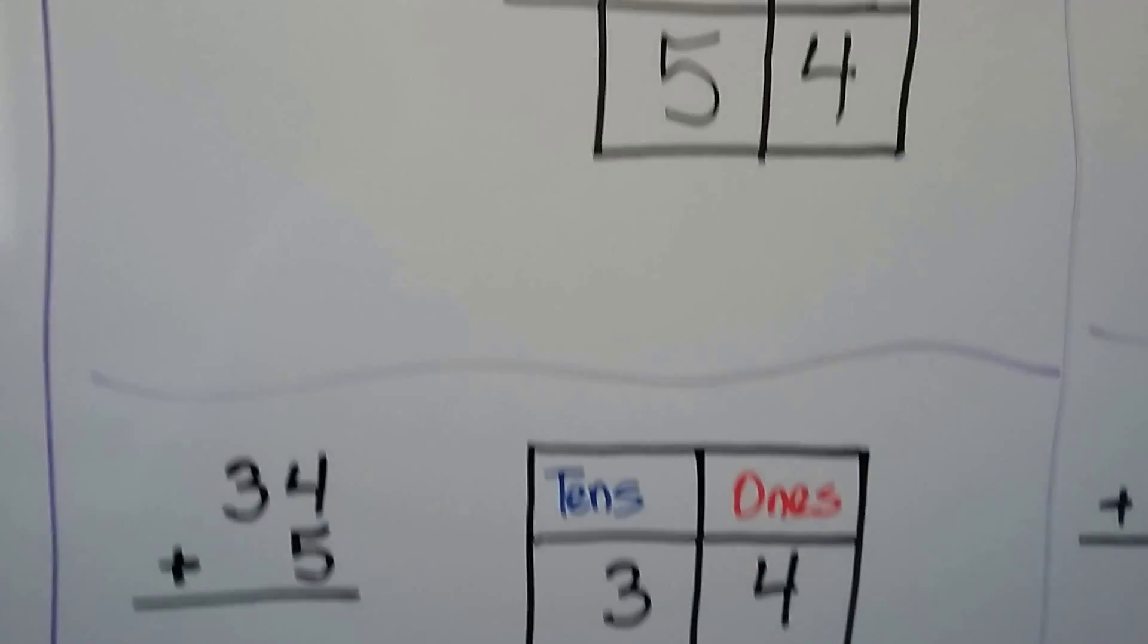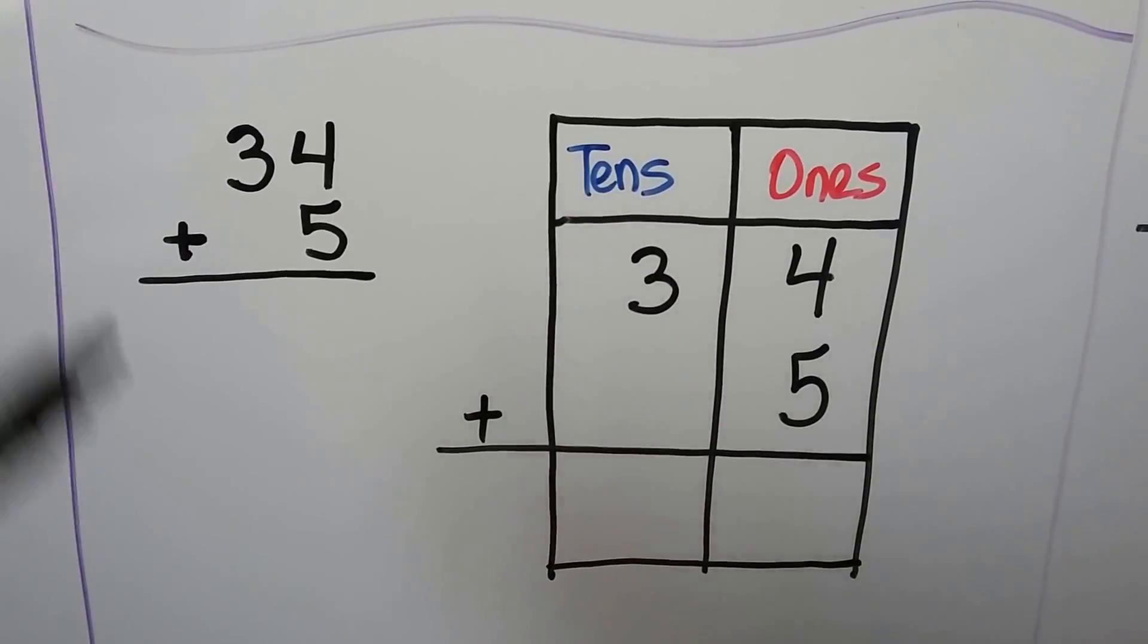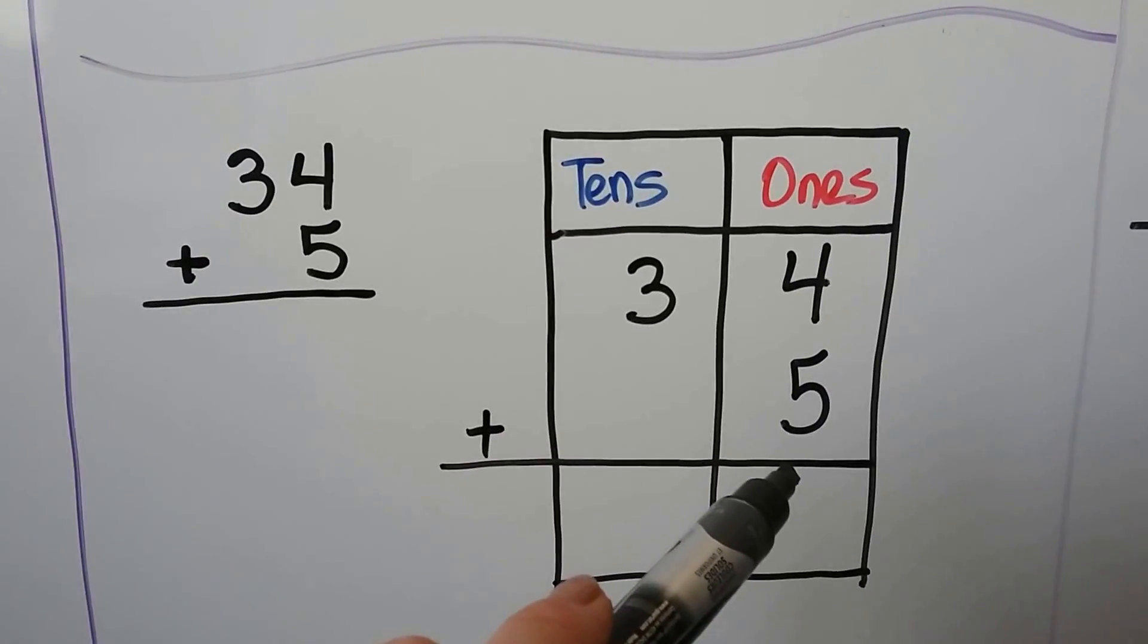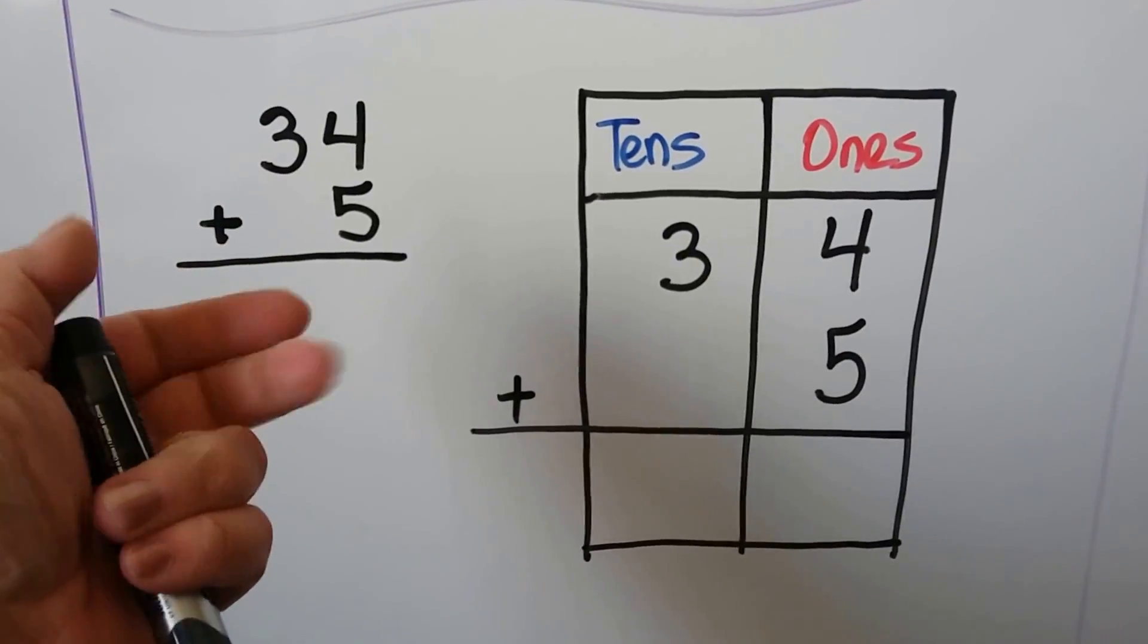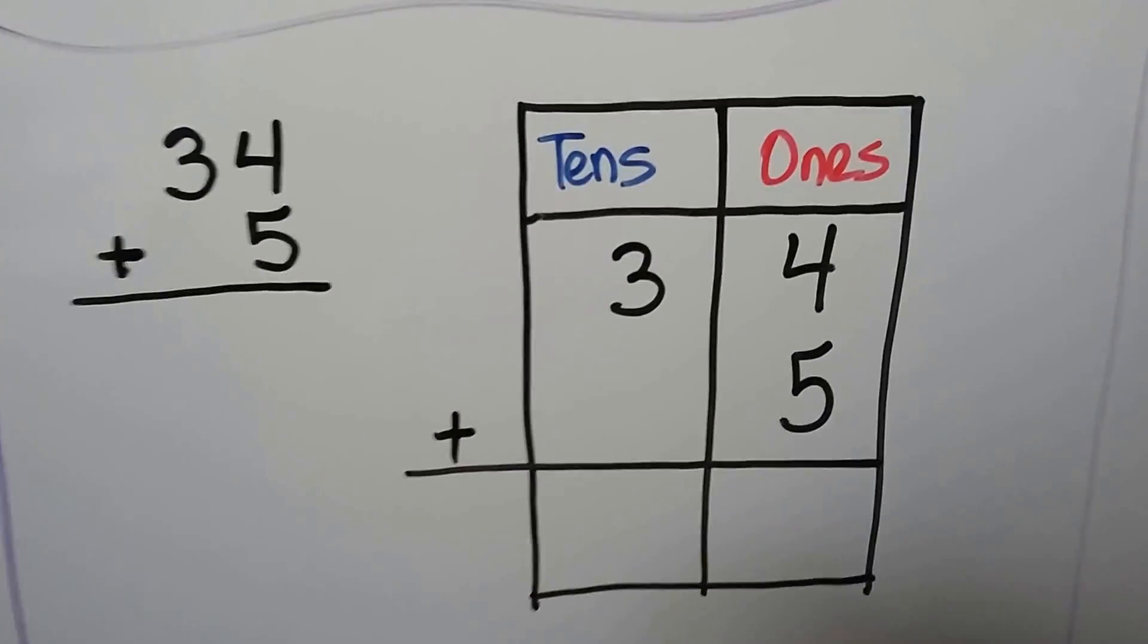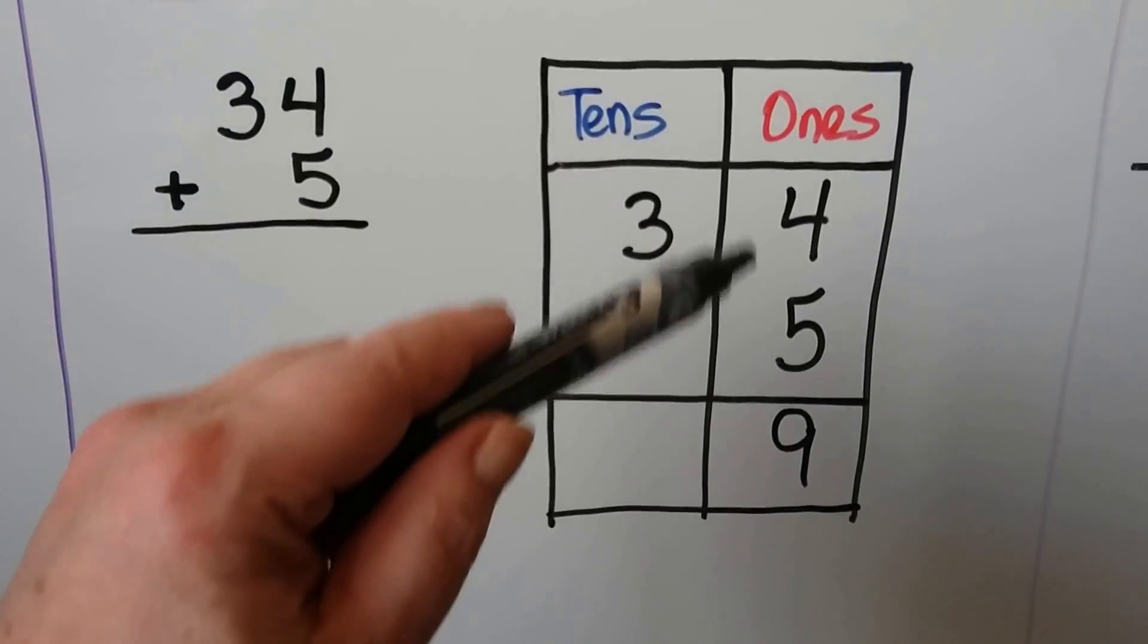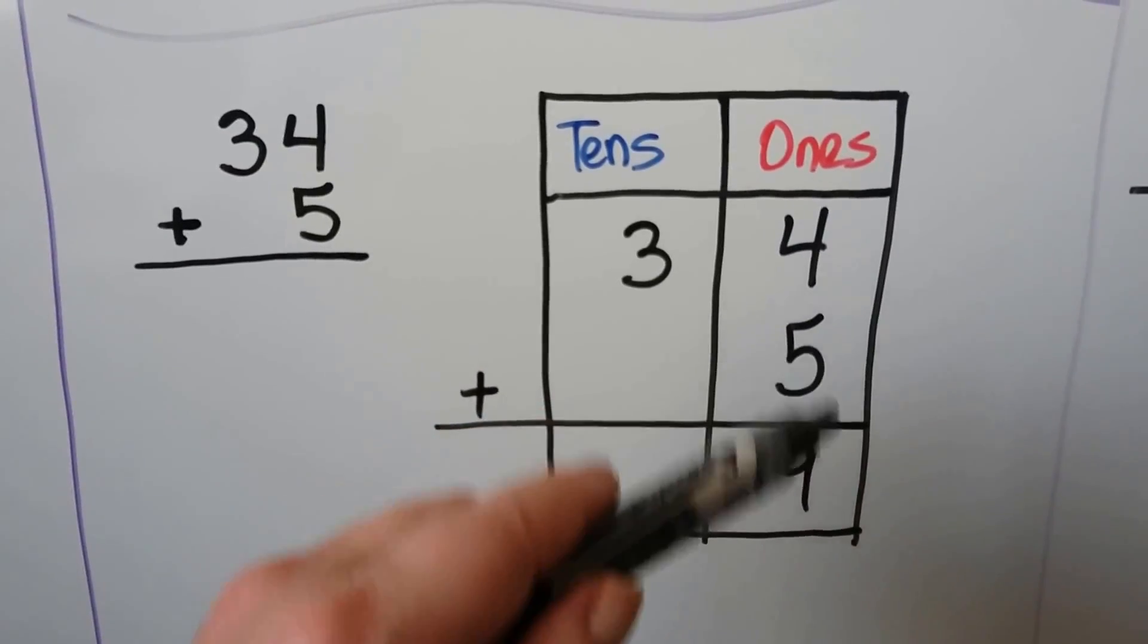Let's try it again. Here we've got 34 plus 5. We add the ones. 4 plus 5. We can start with the 5 and count on 4: 5, 6, 7, 8, 9. We also could have used doubles plus 1, couldn't we? We could have said 4 plus 4 is 8, plus 1 more for the 5 makes a 9.